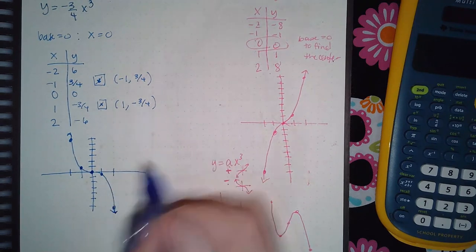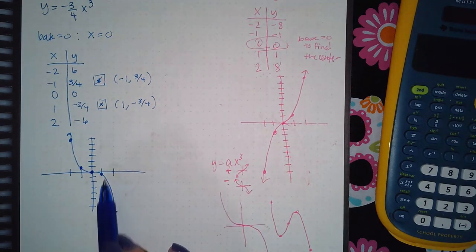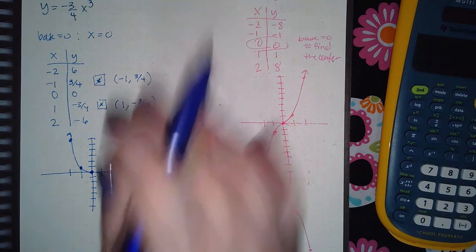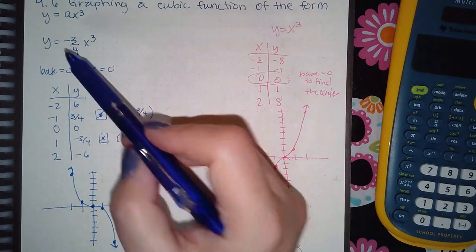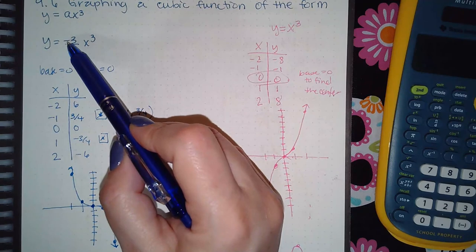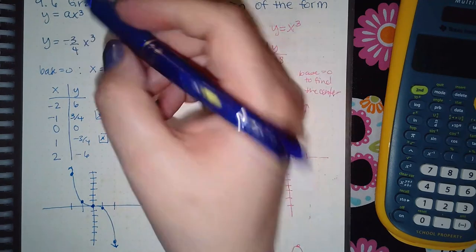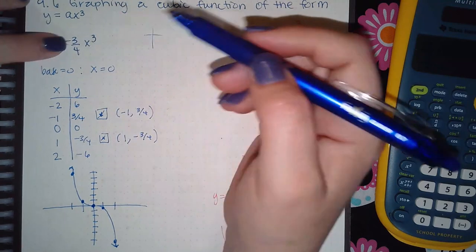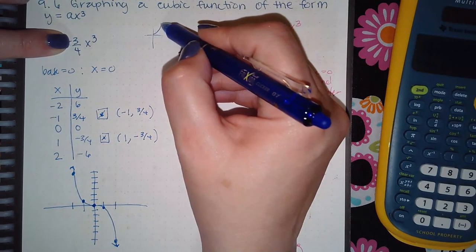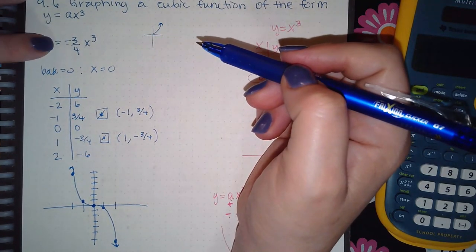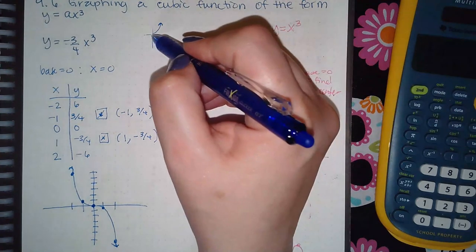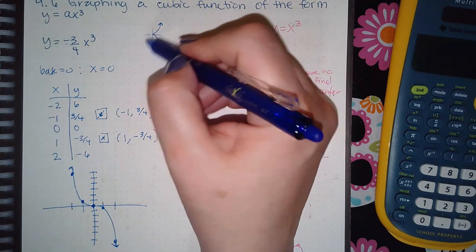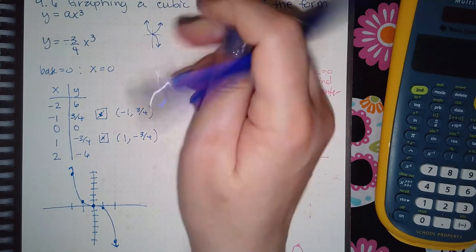And so you notice that the curve goes down on the positive x side, so over here on the positive x side it's going down. And why is that? That is because the coefficient in the front was negative. So the coefficient in the front tells me: if it's positive, if it were just regular three-fourths, I know that this arm would be going up. But because it's negative three-fourths, that's why the arm is going downward. And then the left arm has to do the opposite for a cube function.